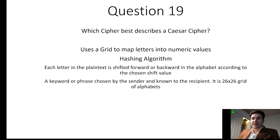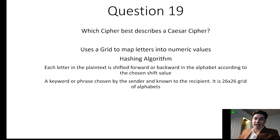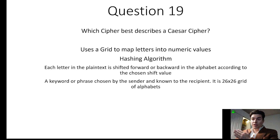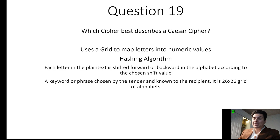Question 19. Which cipher best describes a Caesar cipher? Using a grid to map letters into numeric values is a bifid cipher, a classical substitution method using elements of the polybius and playfair cipher. A hashing algorithm is definitely not the answer. The correct answer: each letter in the plaintext is shifted forward or backward in the alphabet according to a chosen shift value — that is a Caesar cipher. For example, if A is shifted three letters, it becomes D. The last option — a keyword or phrase in a 26-by-26 grid of alphabets — is a Vigenère cipher.